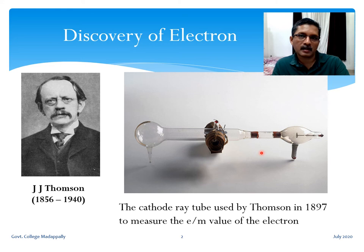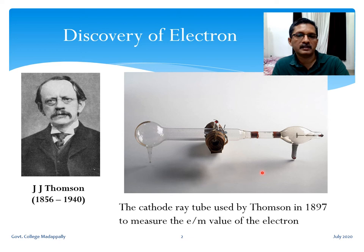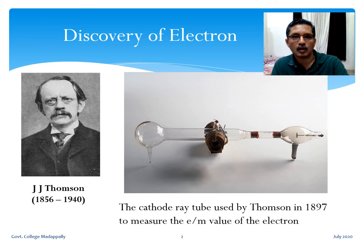The cathode ray tube was responsible for two important discoveries in physics. In 1895, X-rays were discovered using this type of glass tube — an X-ray tube is essentially a redesign of the cathode ray tube. In 1897, it was used in the measurement of the charge-to-mass ratio of the electron. That is the history of the cathode ray tube.